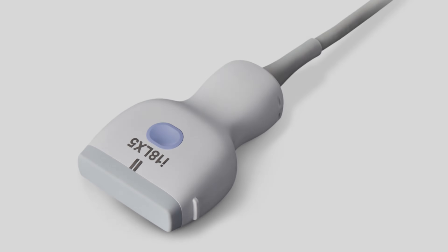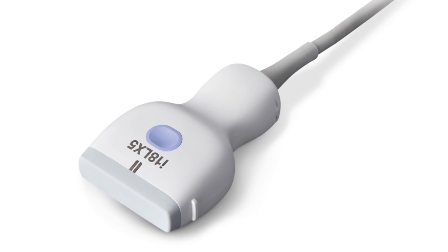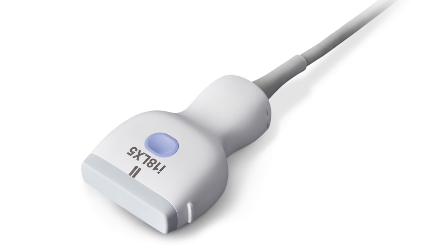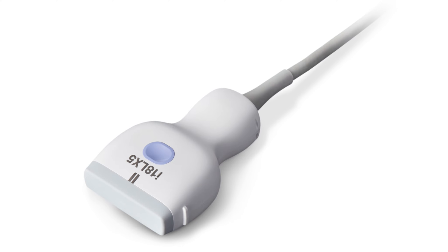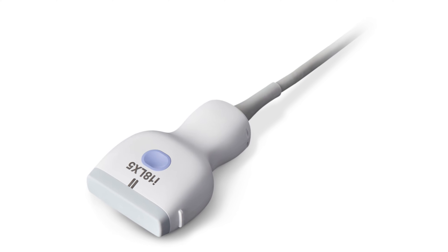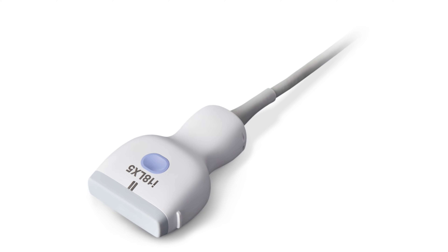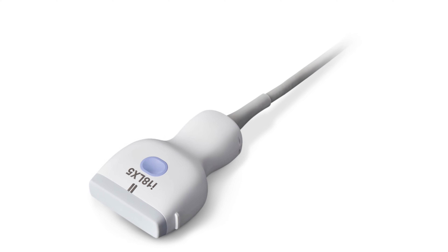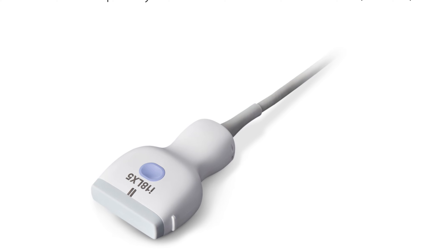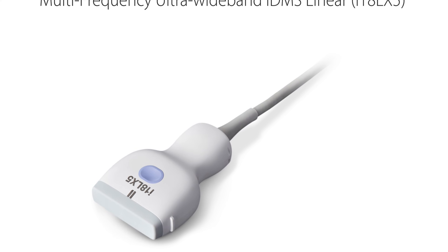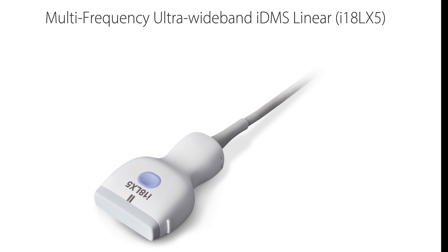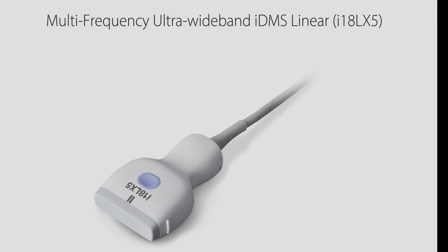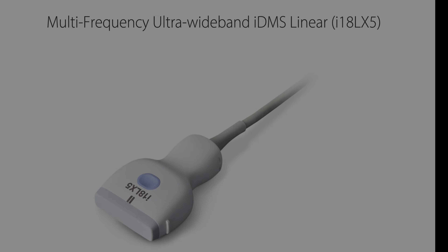Shoulder ultrasound examination is not easy to do, so it is important that you optimise your chances of success by selecting the correct tools for the job. To be able to assess the shoulder muscles and tendons, a high frequency linear probe is essential. In this demonstration we use a Canon Medical multi-frequency 18-5 linear probe.